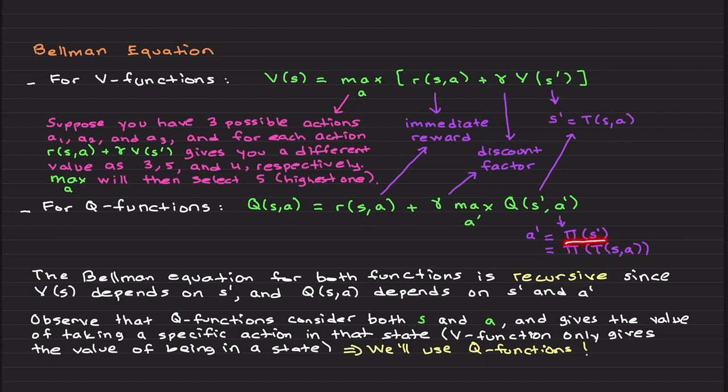Which a' is pi(s'), and basically you can write it like this. So the Bellman equation for both functions is recursive since V depends on s' and Q depends on s' and a'.